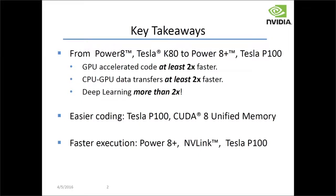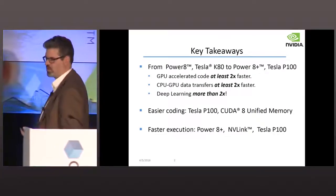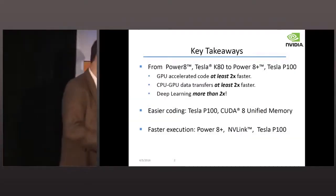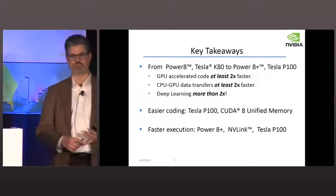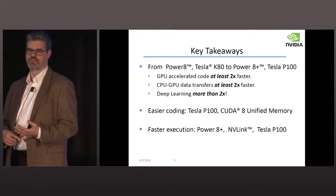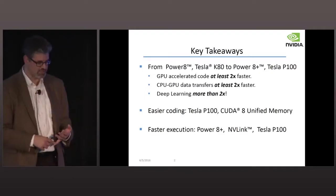If you are already up and running on Power8 and Tesla K80, moving to Power8 Plus and the new Tesla P100 is going to be really easy, and your code is going to be at least two times faster — probably three. That's whether it's limited by GPU performance or by data movement from the CPU to the GPU. If your code happens to be a deep learning code, it's going to be a lot more than two times faster, depending on whether you can take advantage of the FP16 half-precision instructions on Pascal.